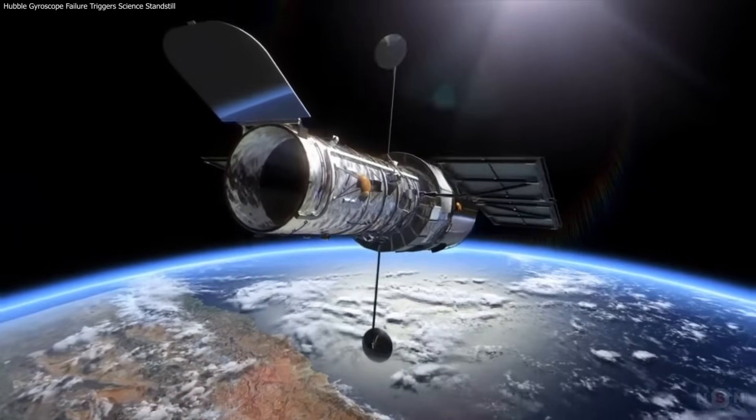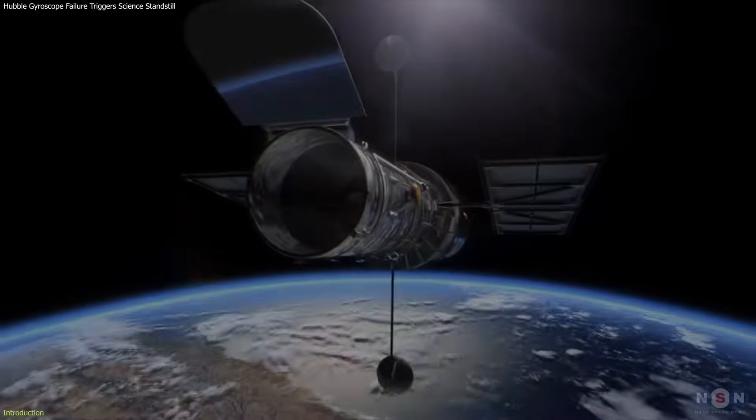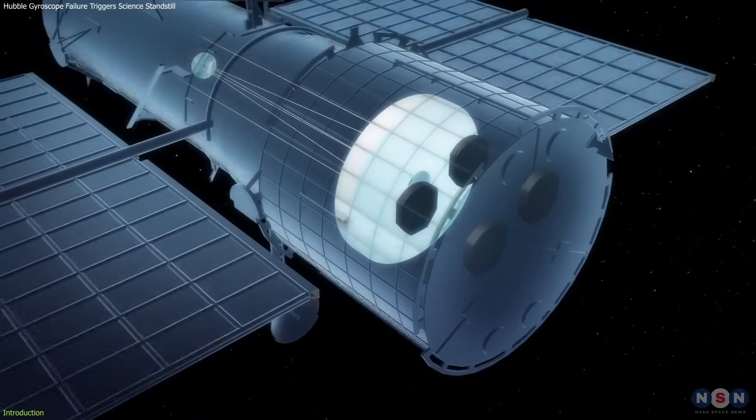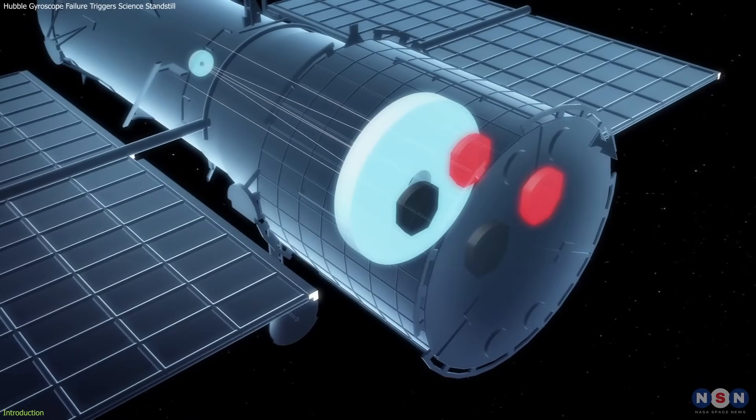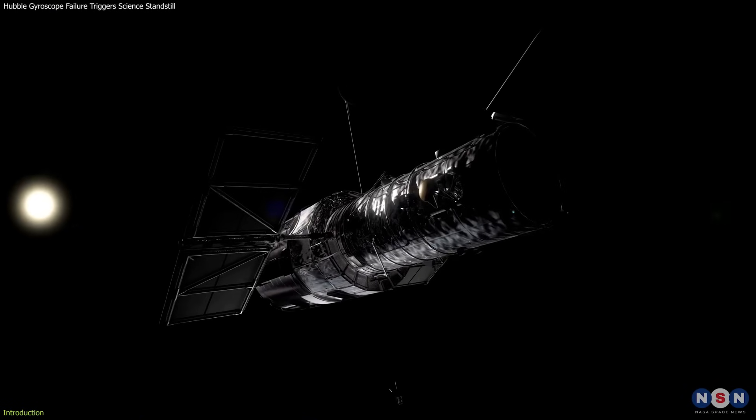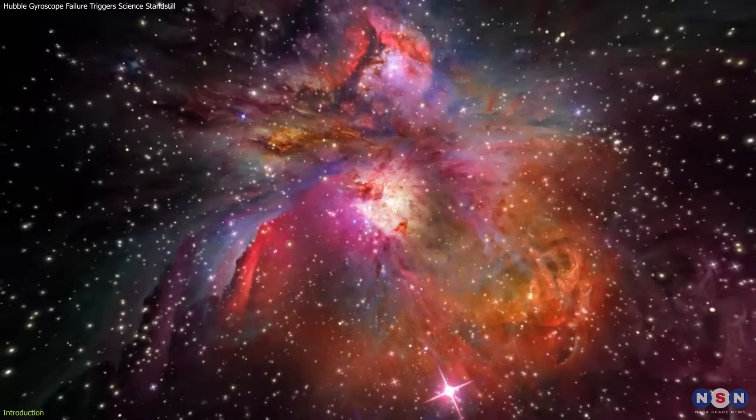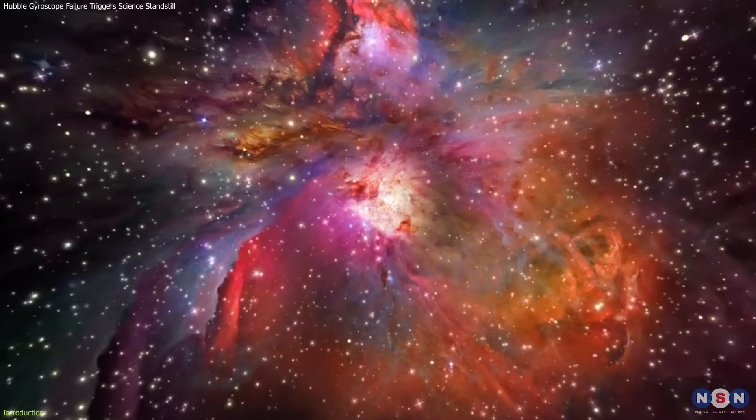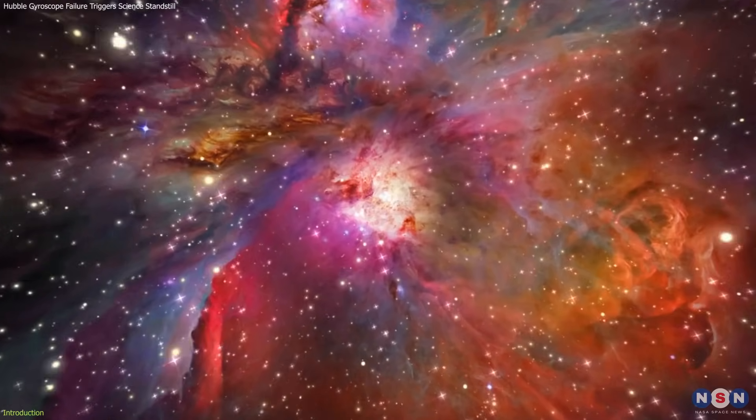NASA has paused science activities for the Hubble Space Telescope after one of its three gyroscopes sent faulty readings back to Earth. This critical issue has thrust Hubble into safe mode, suspending its gaze into the cosmos and halting its scientific observations.